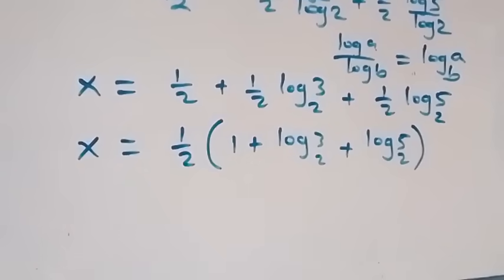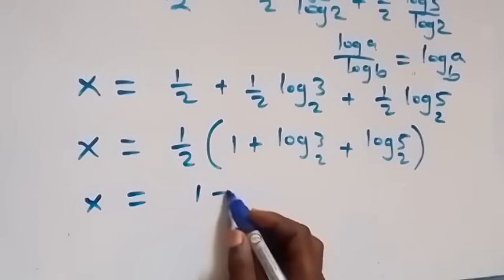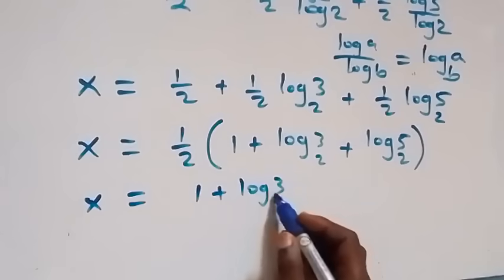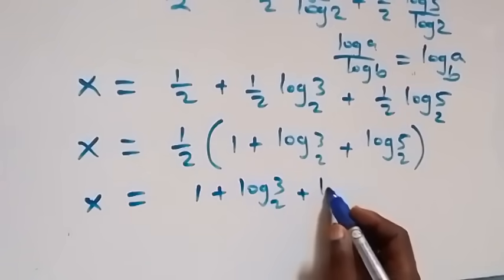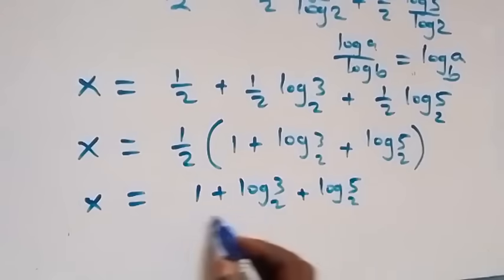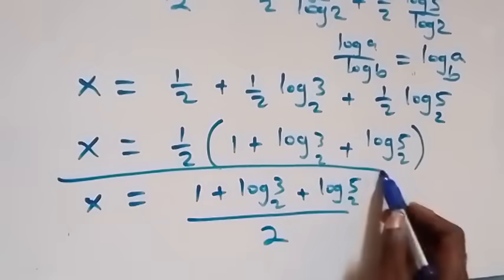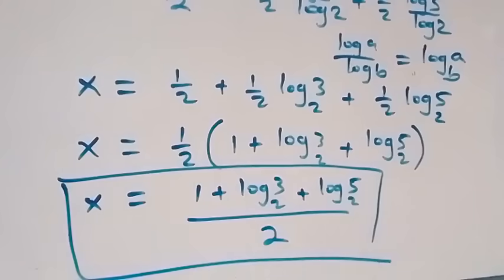Factoring out one half, this can also be written as x equals 1 plus log 3 base 2 plus log 5 base 2, all over 2. So here we have the value of x in this problem.